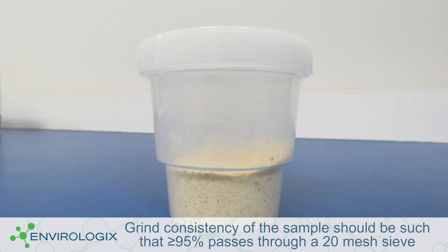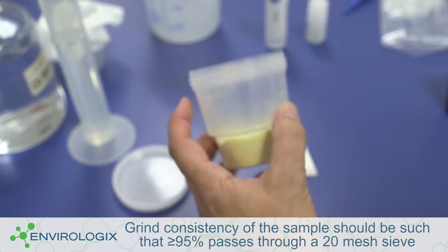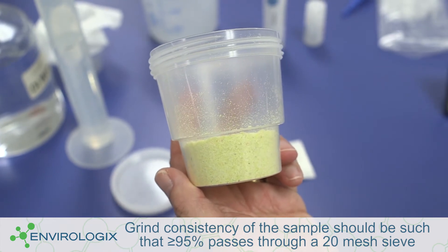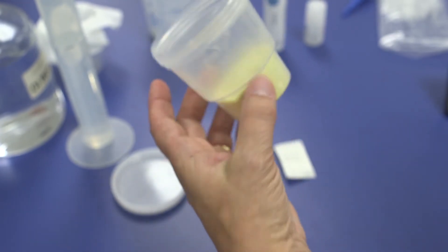When testing a 25-gram sample, place 25 grams of ground sample into a suitable hard-walled container, such as a disposable 5-ounce sample cup with a lid.